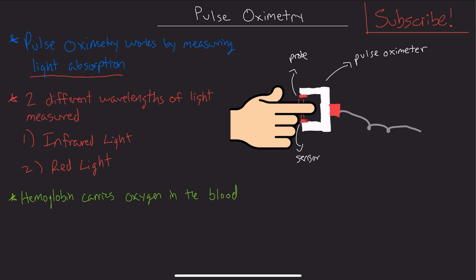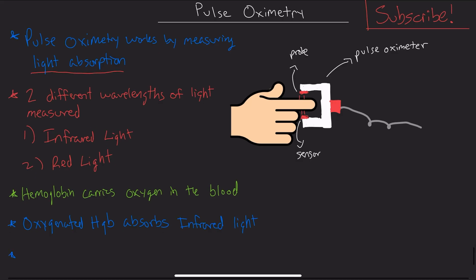What happens is hemoglobin that has oxygen connected to it, so oxygenated hemoglobin, is going to absorb a different wavelength than deoxygenated hemoglobin. Oxygenated hemoglobin absorbs infrared light, while deoxygenated hemoglobin absorbs red light.